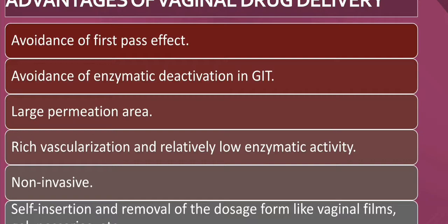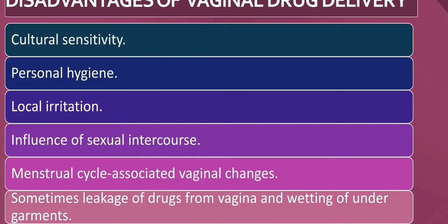The advantages of vaginal drug delivery include avoidance of the first-pass effect, avoidance of enzymatic deactivation in the GIT, a large permeation area, rich vascularization, and low enzymatic activity compared to the stomach. It is non-invasive, with self-insertion and removal of dosage forms like vaginal films, gels, and suppositories, increasing patient compliance. Disadvantages include cultural sensitivity, personal hygiene concerns, local irritation, influence of sexual intercourse, menstruation cycle-associated vaginal changes, and sometimes leakage of drugs from the vagina and wetting of undergarments.